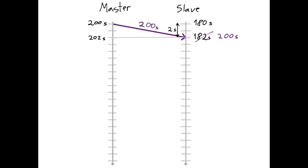So one thing that a PTP slave needs to do in order to properly synchronize its clock with the one from the master is to figure out what the propagation delay is. In that way, it could simply add the 2 seconds of propagation delay to the clock value it received from the master, which would then result in a precise synchronization, with both clocks reading the same value. So figuring out the propagation delay is one problem that PTP needs to solve. But there is another problem as well.